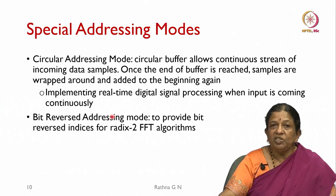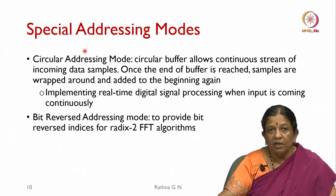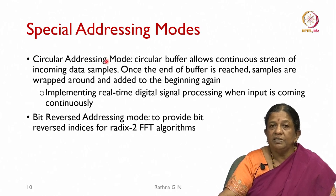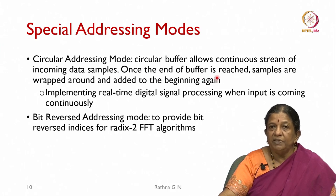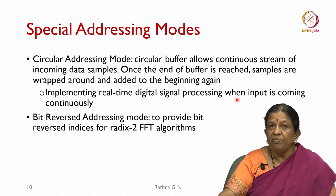Coming to special addressing modes — these are what classify a digital signal processor apart from normal processors. The first one is circular addressing mode. A circular buffer allows a continuous stream of incoming data samples: once the end of the buffer is reached, samples wrap around and are added to the beginning again. This is required for real-time implementation in a DSP processor since the input is coming continuously.